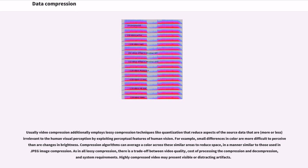Usually video compression additionally employs lossy compression techniques like quantization that reduce aspects of the source data that are more or less irrelevant to the human visual perception by exploiting perceptual features of human vision. For example, small differences in color are more difficult to perceive than are changes in brightness. Compression algorithms can average a color across these similar areas to reduce space, in a manner similar to those used in JPEG image compression. As in all lossy compression, there is a trade-off between video quality, cost of processing the compression and decompression, and system requirements. Highly compressed video may present visible or distracting artifacts.